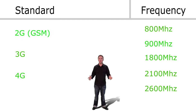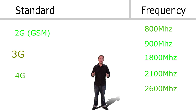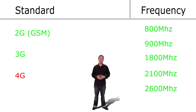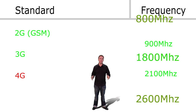2G is transmitted at 900 megahertz and 1800 megahertz. 3G is mainly transmitted at 2100 megahertz, but sometimes it is also transmitted at 900 megahertz, whereas 4G is transmitted at several frequencies.